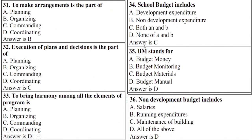Question 35: BM stands for — right option is D: Budget and Manual. Non-development budget includes — right option is D: all of the above, meaning A: salaries, B: running expenditures, C: maintenance of building.